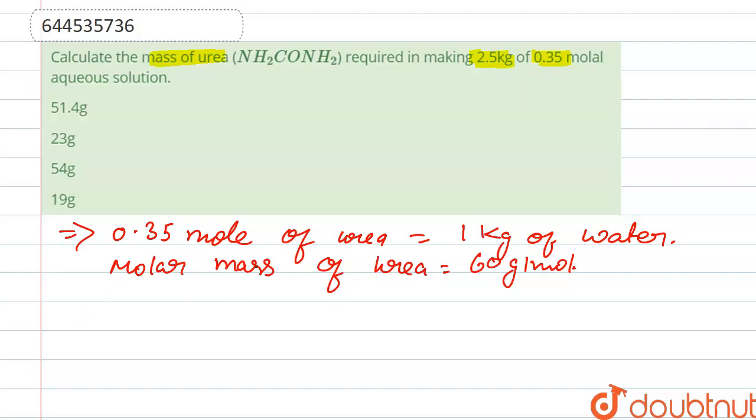With the help of molar mass and moles, we calculate the mass of urea. Mass of urea is 0.35 into 60, which gives us 21 gram. Then we calculate the total mass of solution.